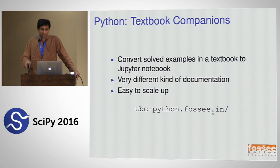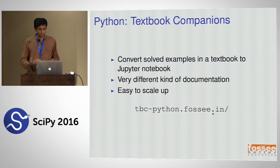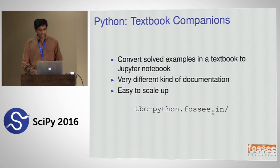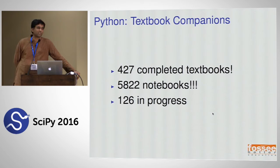Now for something really exciting — textbook companions. How do students contribute documentation? It's kind of hard; they don't know enough. So you take an existing textbook and convert all the solved examples into an IPython notebook with the code. Any student can do it if they know basic Python. It's a very different kind of documentation, very easy to scale up. It's hosted at tbc.python.fossee.in. We have 427 completed textbooks, 5,822 notebooks, and 126 in progress — a huge amount of information.